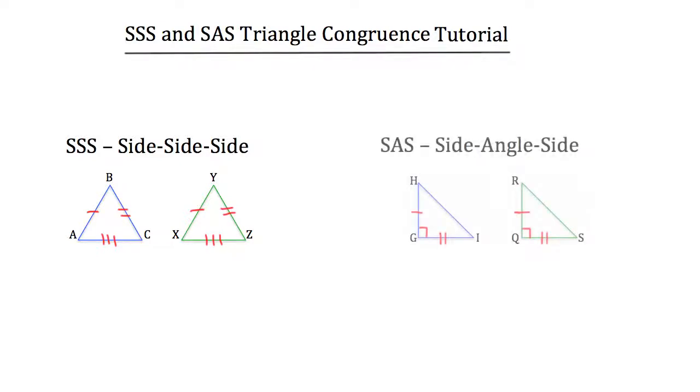So side-angle-side, SAS, means that for two triangles to be congruent using this postulate, they must have two sides that are congruent and an included angle that is also congruent. What I mean by an included angle is that the angle falls between those two congruent sides. Notice how the A falls between the two S's here? That's a good way to remember that the angle has to be between those two sides.